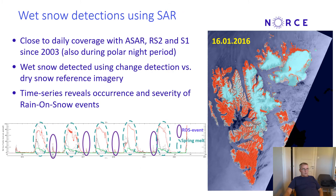We have also used synthetic aperture radar to detect wet snow. We have close to daily coverage using Envisat ASAR, Radarsat-2 and Sentinel-1 since 2003, also during the polar night period. Wet snow is detected by using a change detection method versus a dry snow reference image. We can see in the image to the right the areas in red where we detect wet snow on a typical day. From the time series we can reveal the occurrence and severity of rain or snow events on Svalbard.